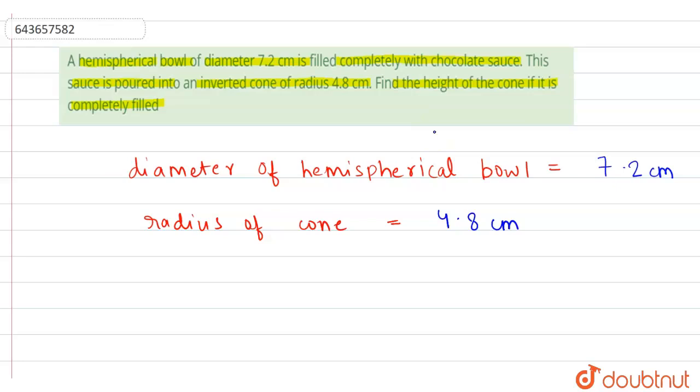This implies that the volume of hemispherical bowl is equal to volume of cone.